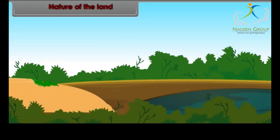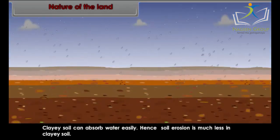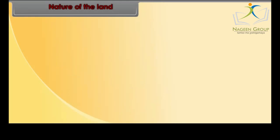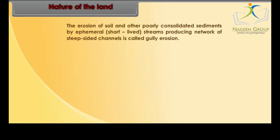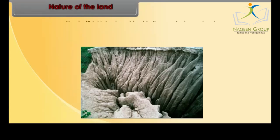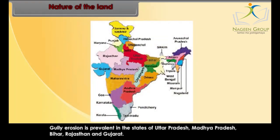Nature of the land is one of the important factors for soil erosion. Clay soil can absorb water easily, hence soil erosion is much less in clay soil. Soil erosion by water is also much less on sandy soils. Gully erosion is the erosion of soil and other poorly consolidated sediments by ephemeral (short-lived) streams producing a network of steep-sided channels. Nearly 40 lakh hectares of land in the country have been degraded due to gully erosion, which is prevalent in Uttar Pradesh, Madhya Pradesh, Bihar, Rajasthan and Gujarat.